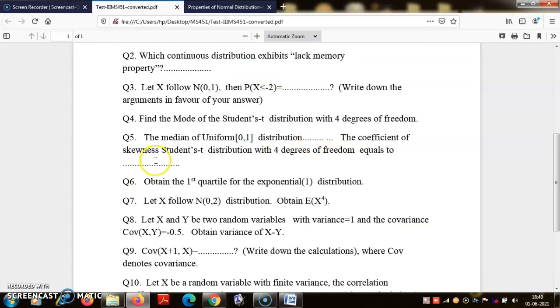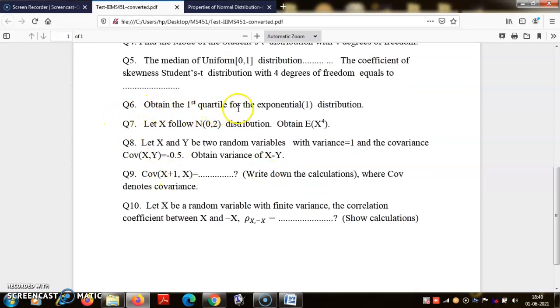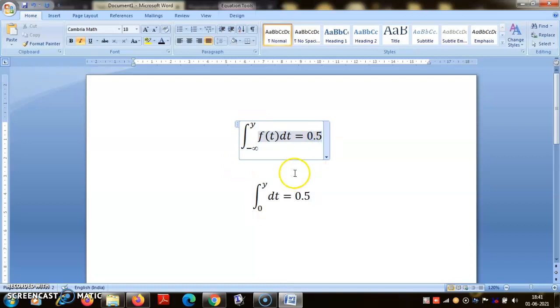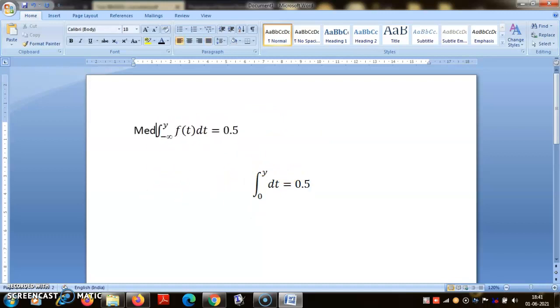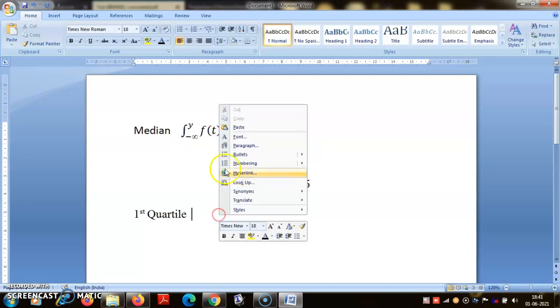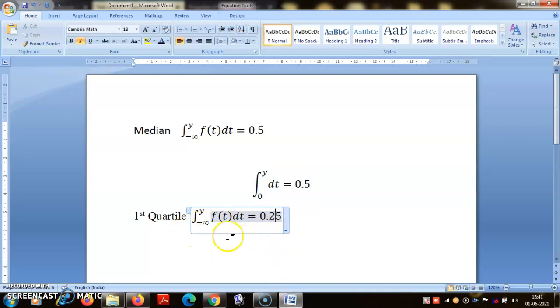The median is zero plus one by two - integral zero to Y dy will be equal to 0.5. For first quartile of exponential distribution, this has been correct. The same thing will apply - for quartile, this equation will become 0.25. For exponential distribution, the formula gives log of three by four.